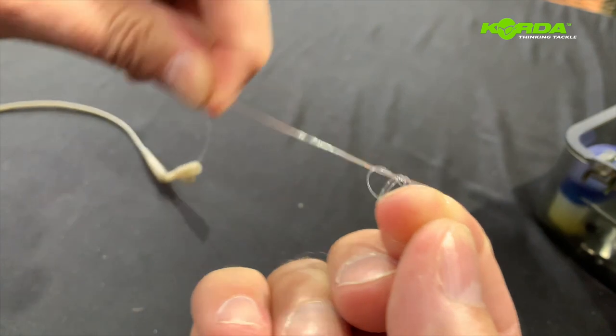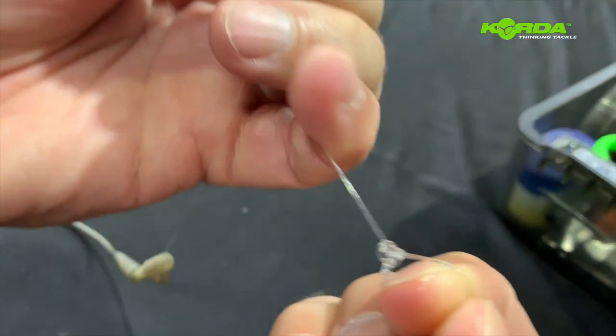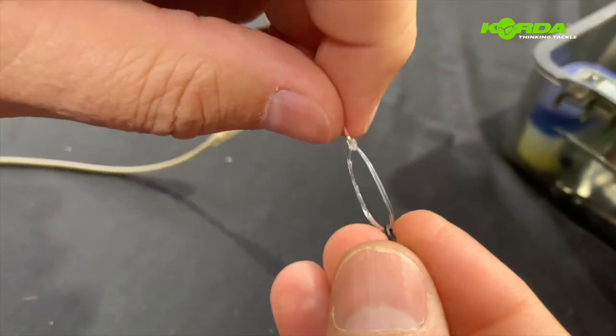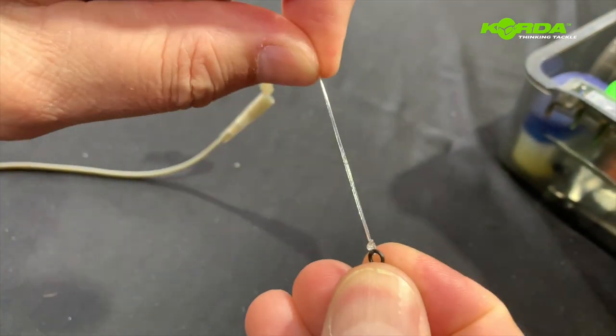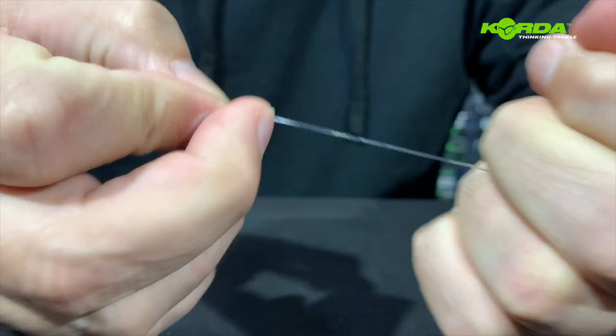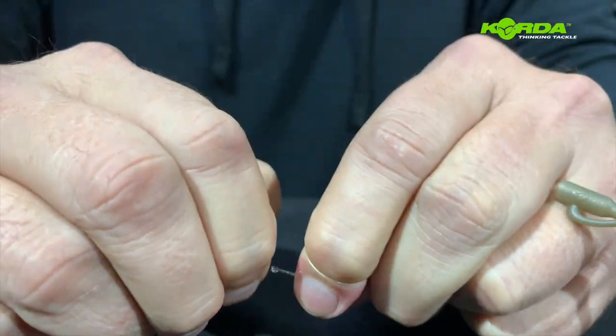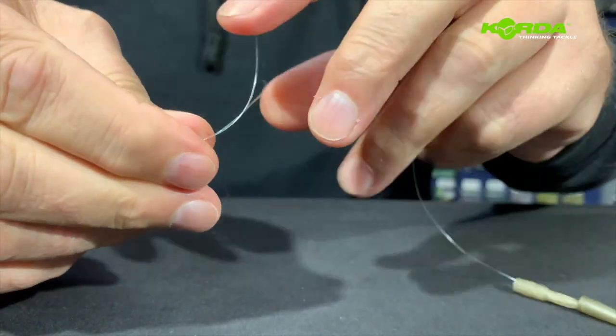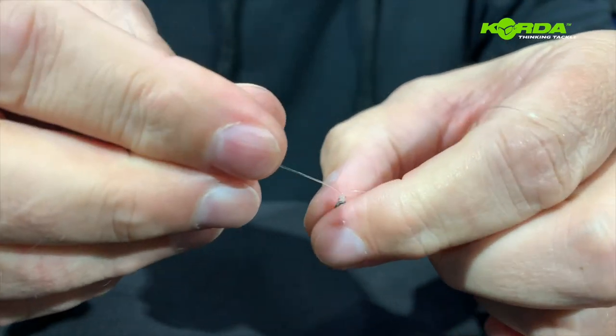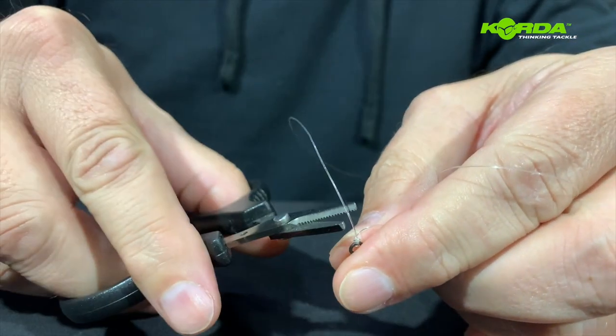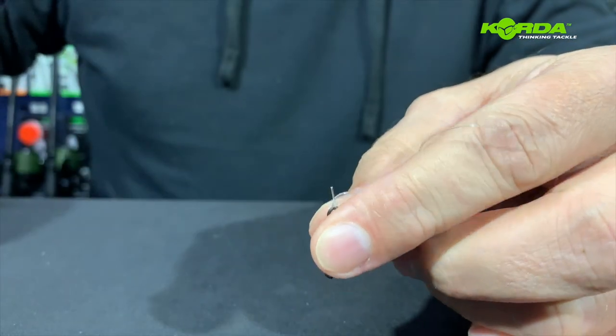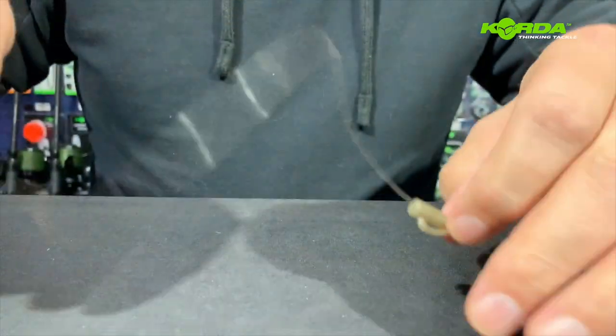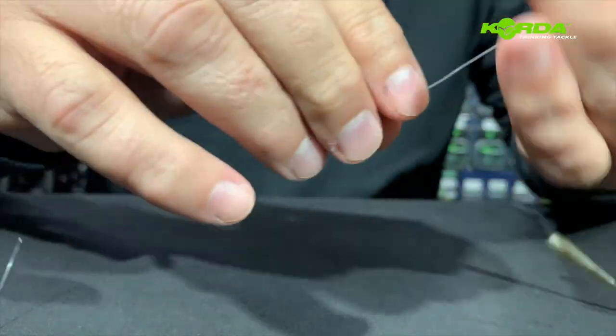Now I've got my other forefinger, wet it with a bit of saliva. Now I've got a knot that looks like that, and now it's just a matter of pulling it down and cutting the tag end off. Now I can pull everything into one another.